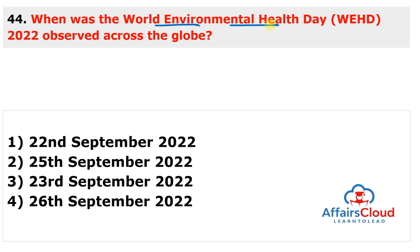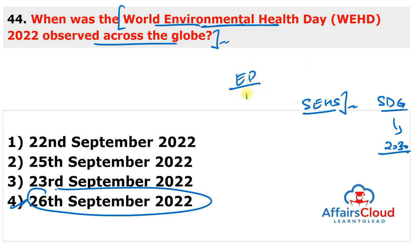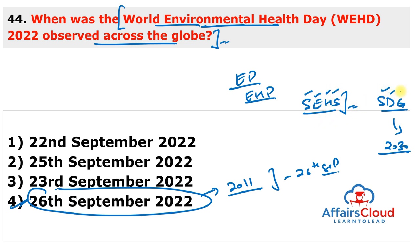World Environment Health Day 2022 was observed on 26th September 2022 with the theme 'Strengthening Environmental Health Systems for the Implementation of Sustainable Development Goals.' The day aims to promote improvement of environmental parameters and services of environmental health professionals. This day was first observed in 2011 on 26th September.